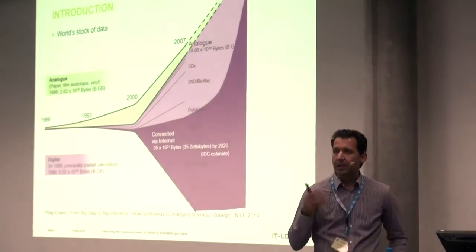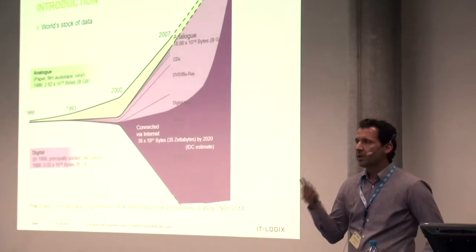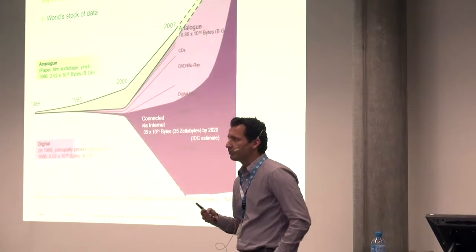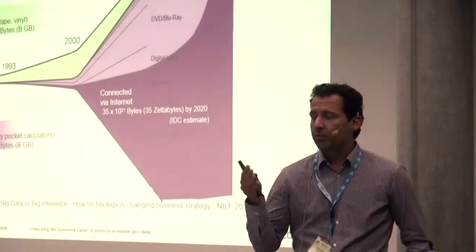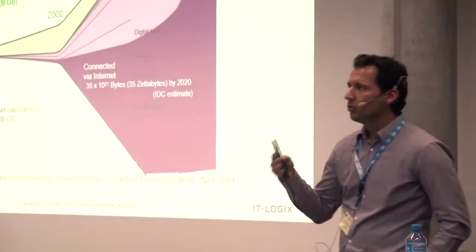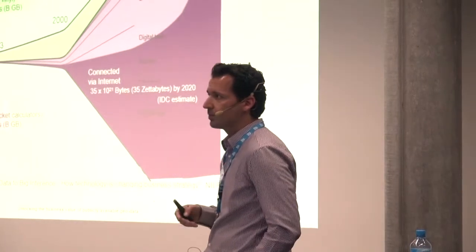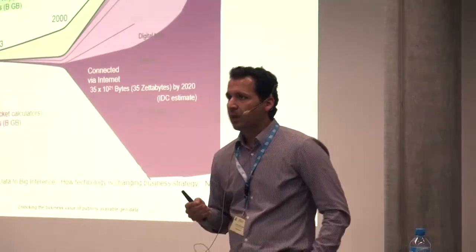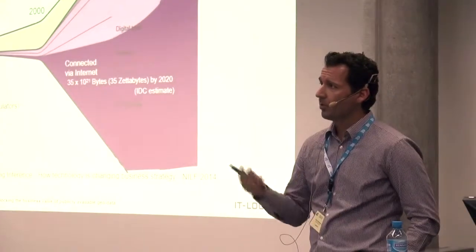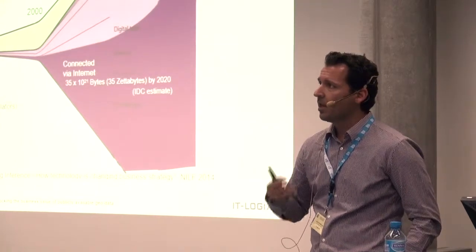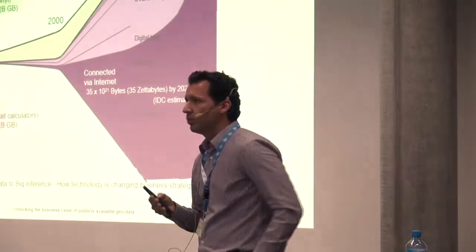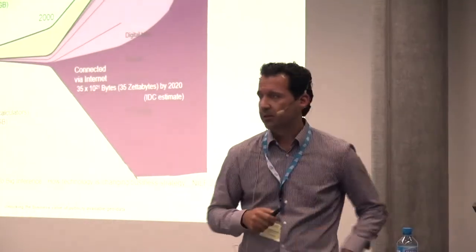Think about telematics, weather data, social media data — all this external data can be combined with internal data to create considerable value. For example, combining weather data with previous sales allows much better forecasting. When you combine marketing data with social media data, that reveals a lot about personal preferences and allows much more targeted marketing. There are many examples of connecting business and external data.